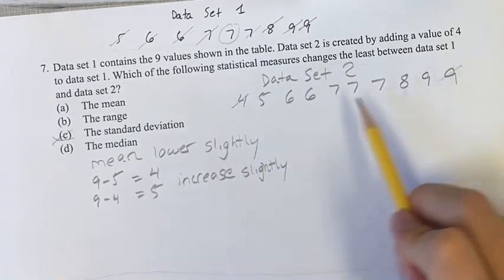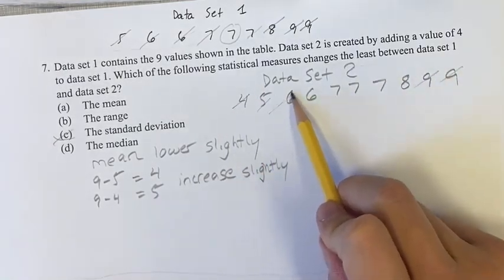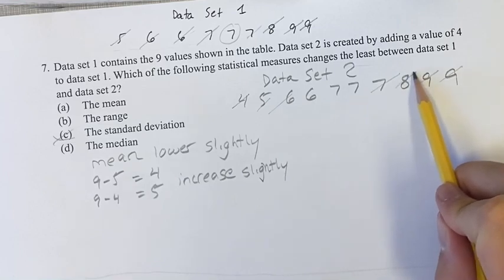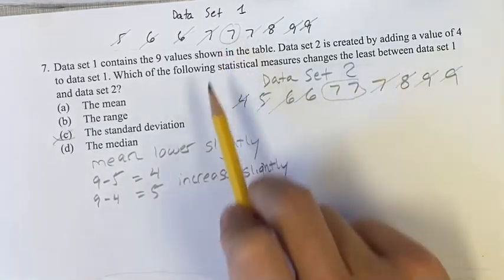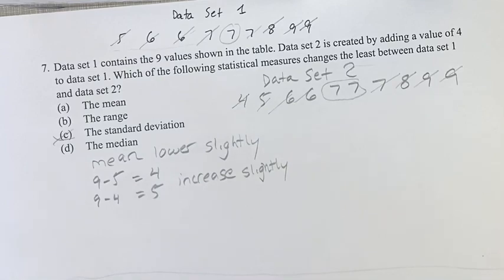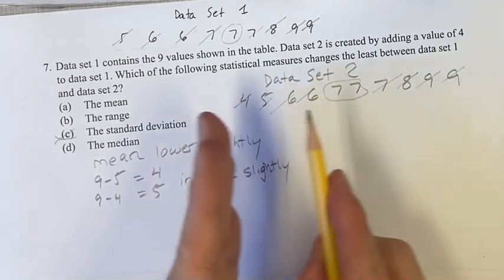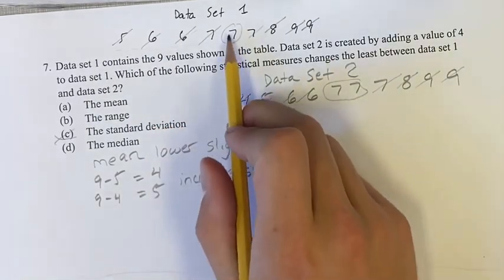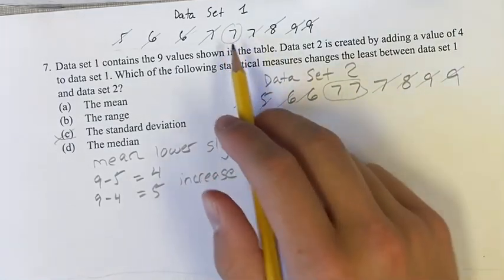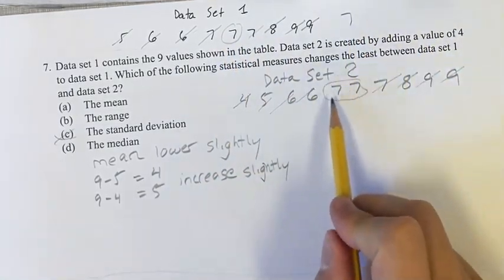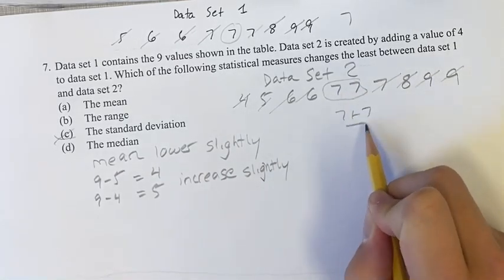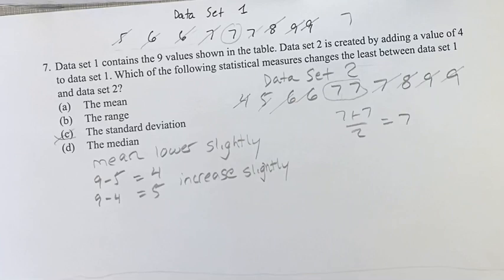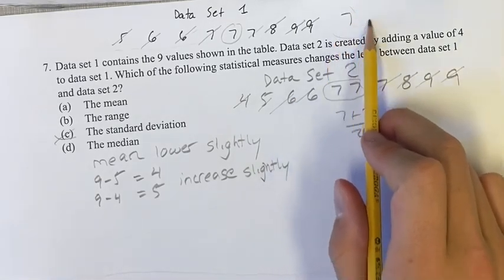Going here, adding one—sorry, out of order a little bit—adding one brings us down to these two sevens from this one 7. All we're doing is slightly shifting over the middle from this number to in between these two numbers. So the median of data set 1 is 7. The median of data set 2 is the average of the two middle numbers, which is 7 plus 7 over 2, which is just 7. So we can see that the median is not actually changing.